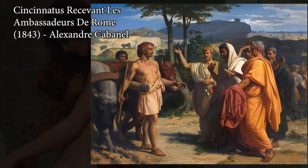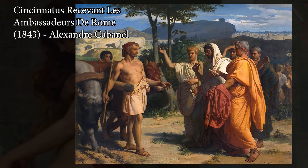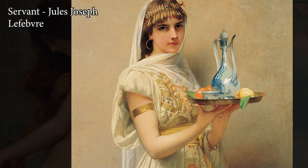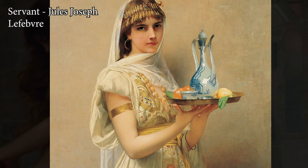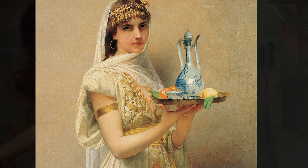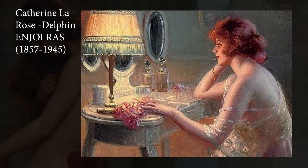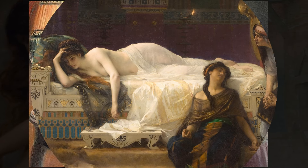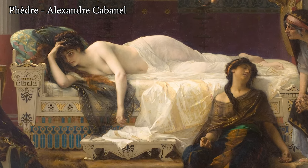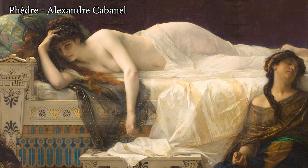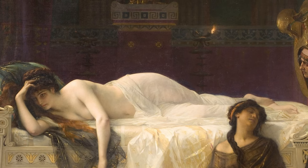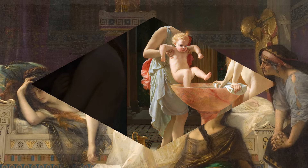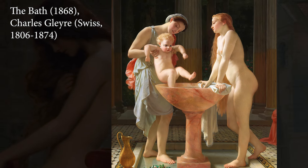By the late 19th century, the influence of academic art had waned, overshadowed by the innovations of the avant-garde. However, its legacy remains significant. Many of the techniques developed in academic settings continue to form the basis of art education today, particularly in figure drawing and composition. Additionally, the emphasis on historical and mythological subject matter influenced later movements including Symbolism and even certain strands of 20th-century art.